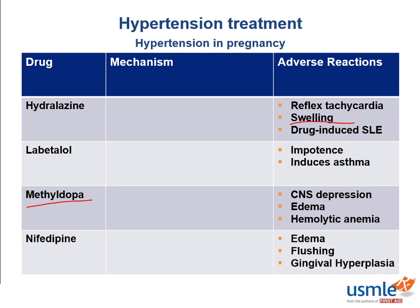Why would labetalol work in pregnancy? Labetalol has alpha-1 as well as beta-1 and beta-2 adrenergic antagonist activity, which can help preserve blood flow for the uterine arteries and placenta. This is because a combination of alpha-1 and beta-2 blockade substantially decreases vascular smooth muscle tone. Remember that beta-1's effect is primarily at the heart.